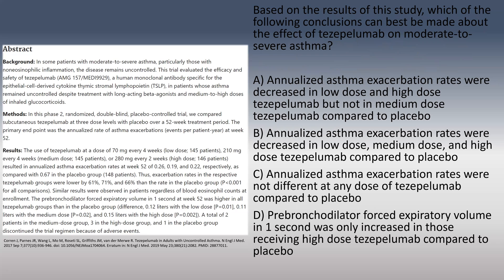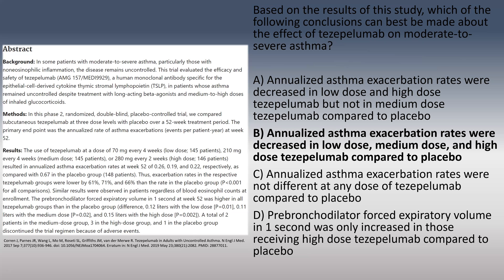The final question asks: based on the results of this study, which of the following conclusions can be made about the effect of this monoclonal antibody on moderate to severe asthma? Option A: annualized asthma exacerbation rates decreased in low and high dose but not medium dose. Option B: exacerbation rates decreased amongst all doses. Option C: no decrease at any dose compared to placebo. Option D: pre-bronchodilator FEV1 only increased in those receiving a high dose compared to placebo. The answer is B — the results show exacerbations were lower by a significant percentage in all groups compared to placebo.